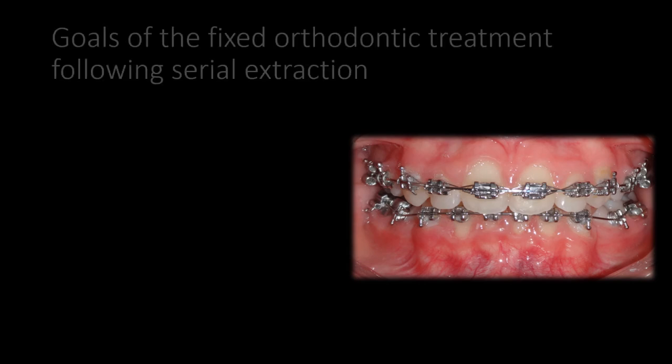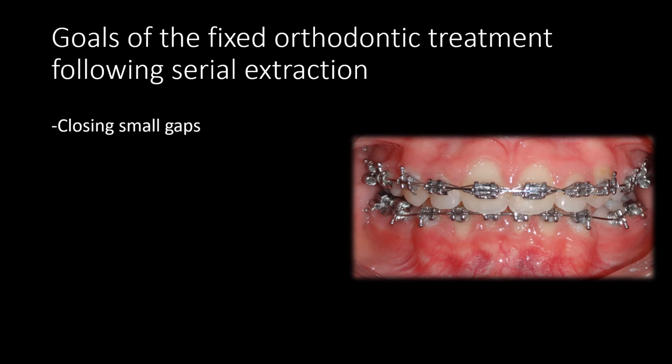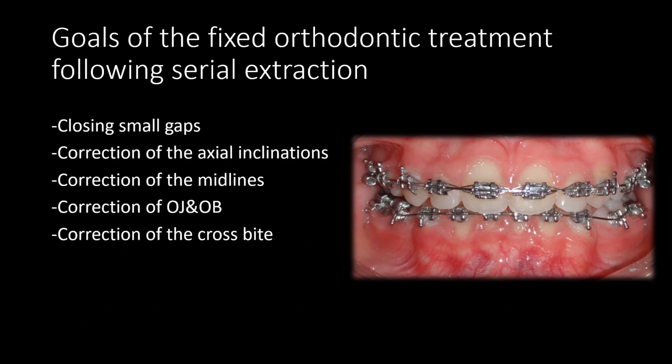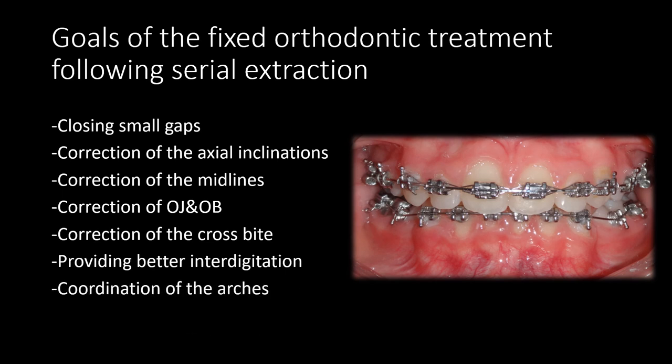After serial extraction, patients often require a short fixed treatment phase. The goals of the fixed orthodontic treatment following serial extraction are: closing small gaps, correction of axial inclinations, correction of midlines, correction of overjet and overbite, correction of crossbite, providing better interdigitation, and finally, coordination of the arches.